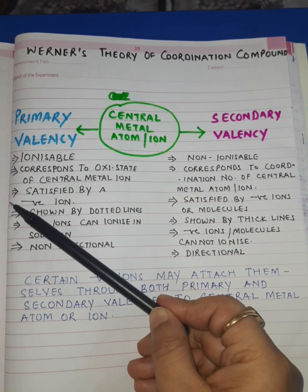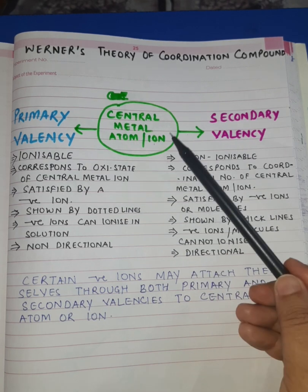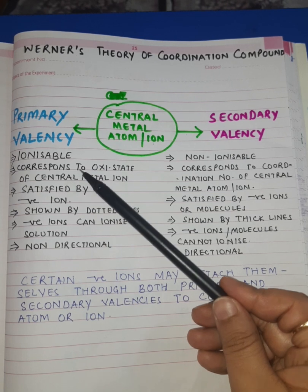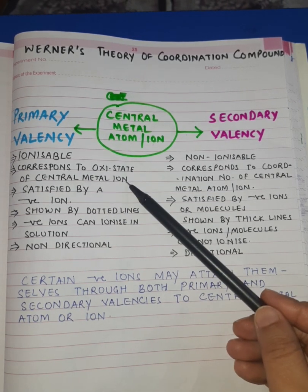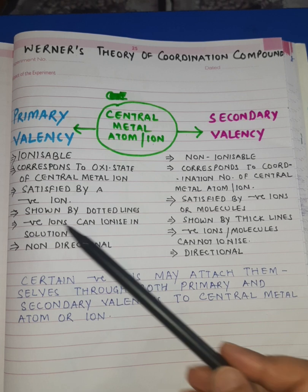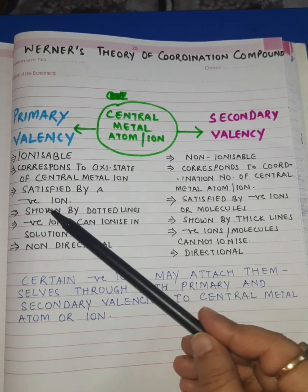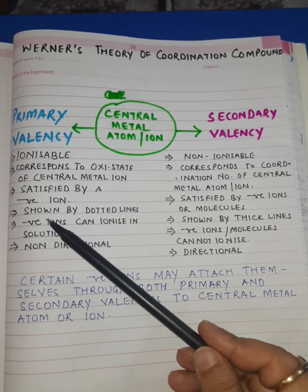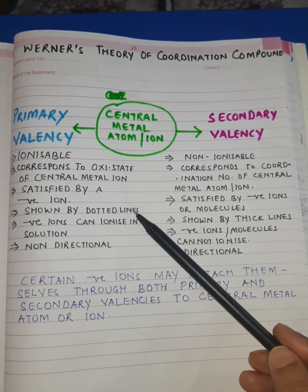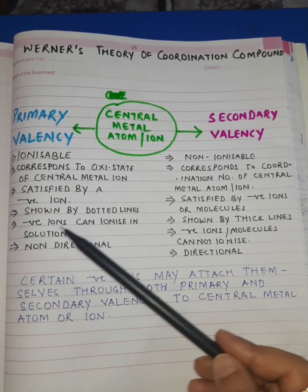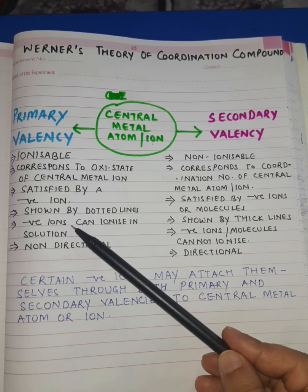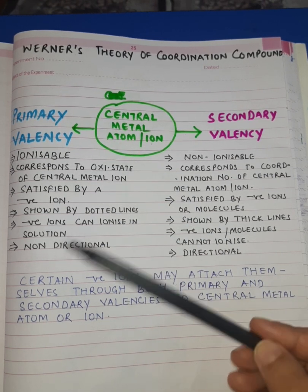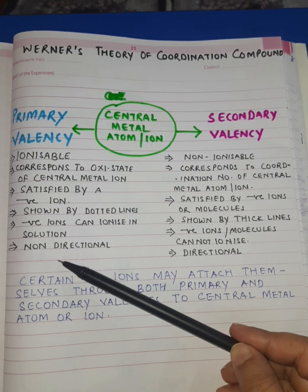The primary valency of a central metal atom or ion is always ionisable, and it corresponds to the oxidation state of the central metal atom or ion. This primary valency is always satisfied by a negative ion, and it is always shown by dotted lines. The negative ions attached via primary valency to the central metal atom or ion can ionize in solution.